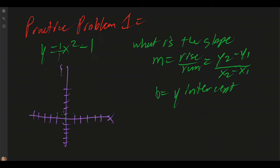Our y-intercept is going to be negative 1, so that means it's going to have to be pinpointed right here in this area. With the slope going 1 over 1, this is just the basics of how we graph our quadratic equation as a first warm-up practice problem.